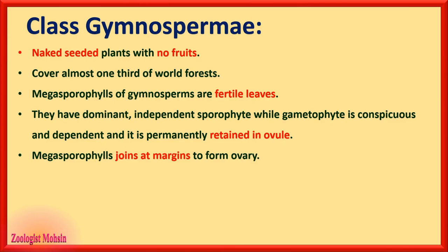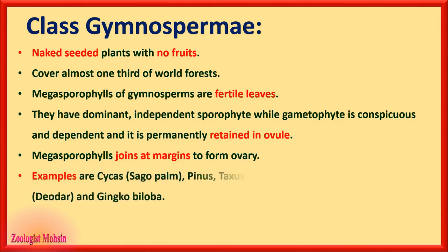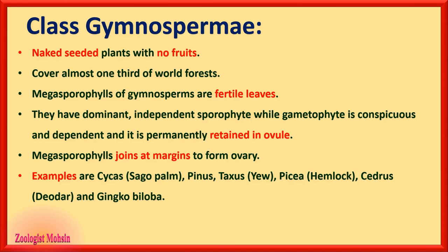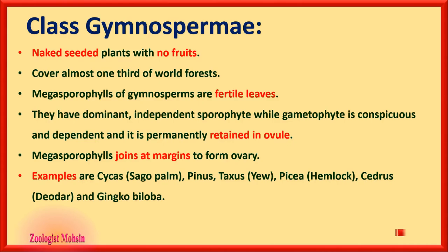The ovule is the house of the gametophyte forever. Megasporophylls of gymnosperms unite at their margins to form the ovary — that is a very important thing to remember. Examples of gymnosperms include Cycas, sago palm, Pinus, the pine tree, Taxus (yew), Picea, hemlock, Cedrus deodara, and Ginkgo biloba.